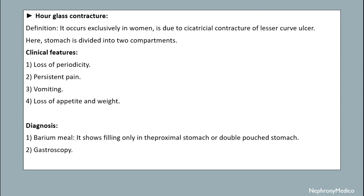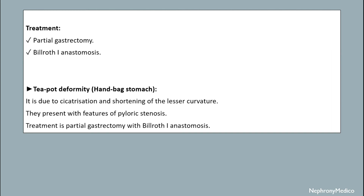Hourglass contracture occurs predominantly in women due to cicatricial contracture of the lesser curvature, dividing the stomach into two compartments. Clinical features include loss of periodicity, persistent pain, vomiting, loss of appetite and weight. Diagnosis is by barium meal showing pooling in the proximal stomach or a double-pouched stomach. Gastroscopy can also be done. Treatment is partial gastrectomy or Billroth-1 anastomosis.